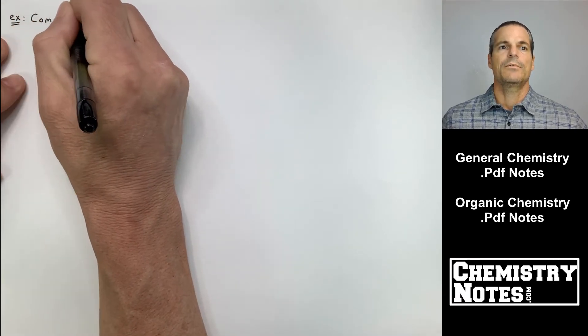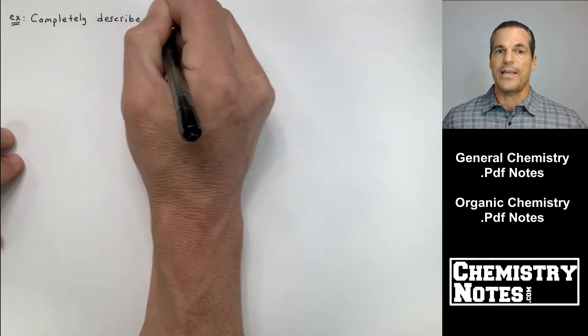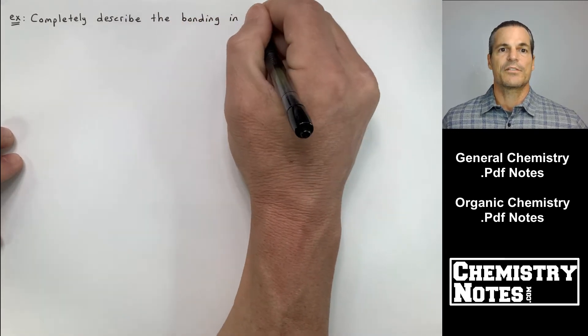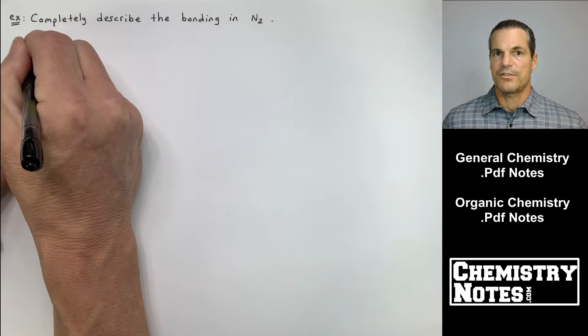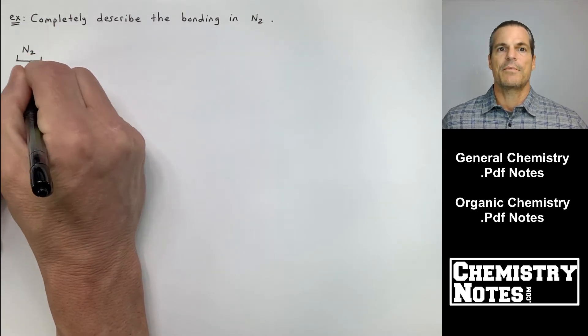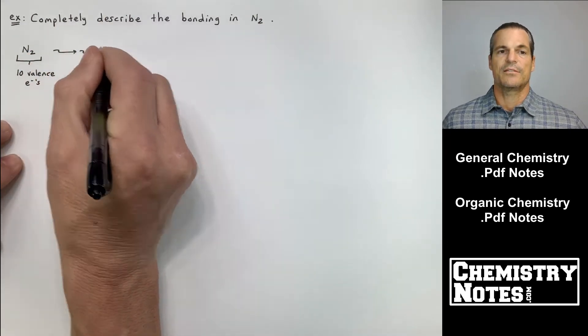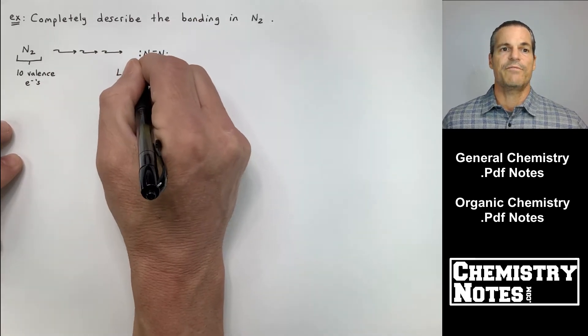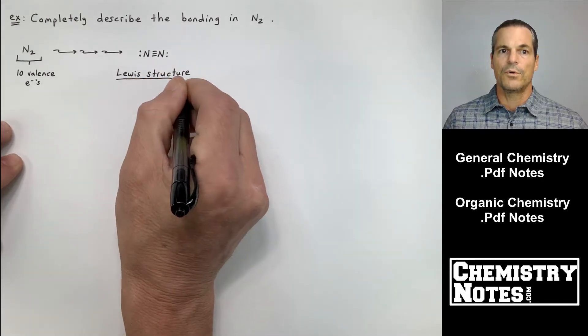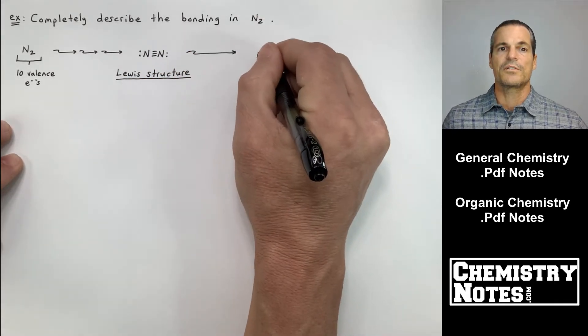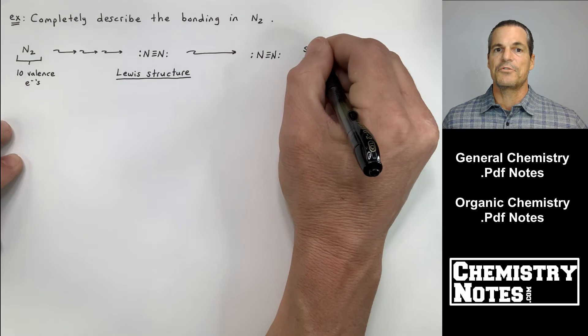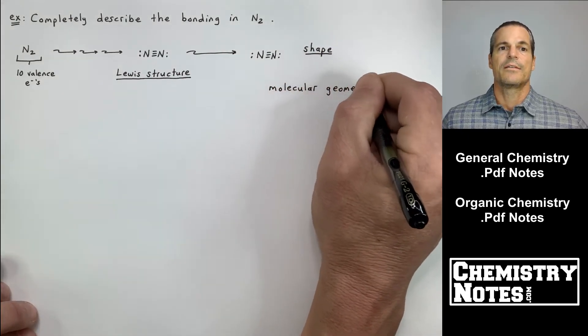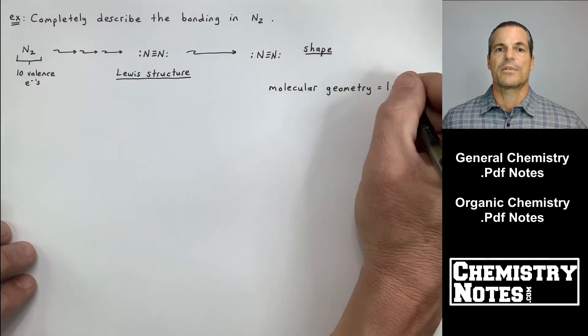Second example, this one wants us to do not NH3 this time, but N2. Completely describe the bonding in N2. This is a nitrogen molecule. So nitrogen N2, 10 valence electrons. You apply the five rules of how to draw Lewis structures and you end up with a nitrogen-nitrogen triple bond with a lone pair on each nitrogen on the outside. This was all covered in section 8 chemical bonding.